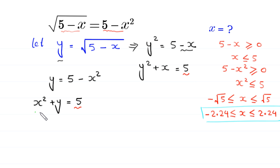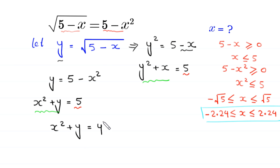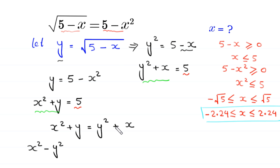Since both equations equal 5, we can write x squared plus y equals y squared plus x. Moving everything to the left-hand side gives x squared minus y squared minus x plus y equals 0.